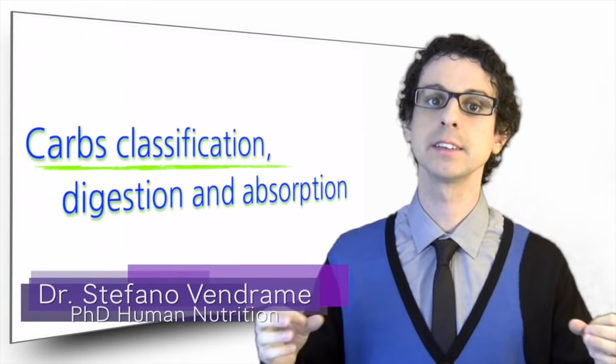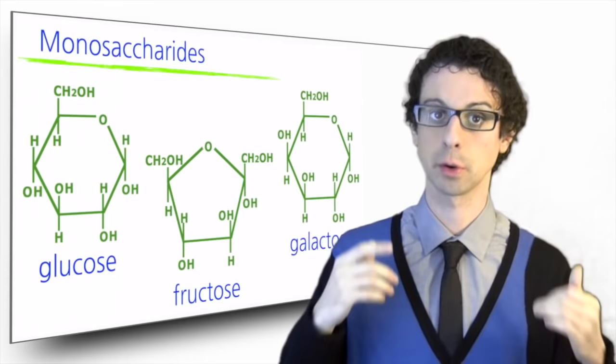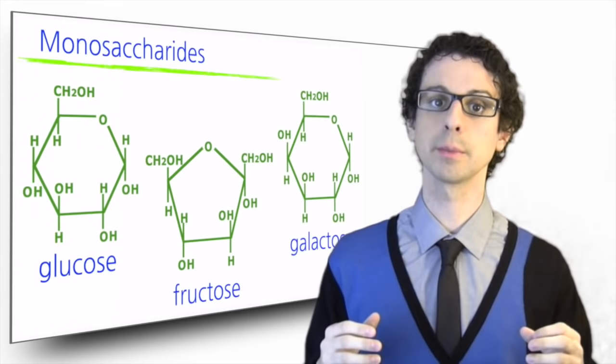One important classification of carbohydrates is based on the number of sugar units that they are made of. Glucose is one of the three nutritionally relevant monosaccharides found in food. The prefix mono for one means that these molecules are made of a single sugar unit.